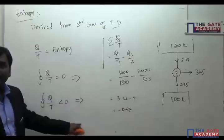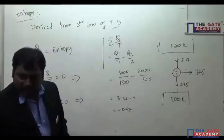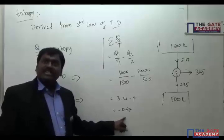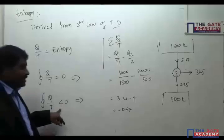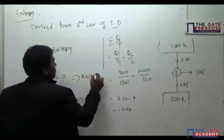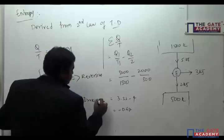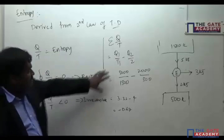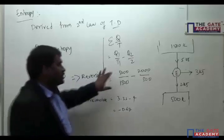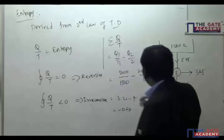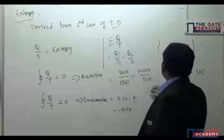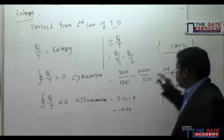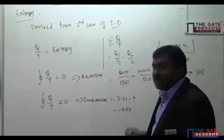For all the problems solved so far: if ΣQ/T equals zero it is reversible; if less than zero it is irreversible. To make this cycle reversible, we need to add 1 kJ of extra work. That makes the heat rejection 6 kJ (6000/500 = 4), so 5000/1500 minus 6000/... wait — Q2 becomes 6 kJ and 6000/1000... the ratio becomes 0, making the cycle reversible.